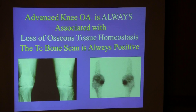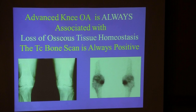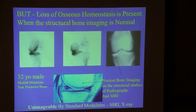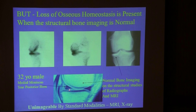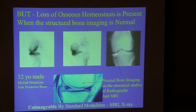Advanced knee arthrosis is always associated with loss of tissue homeostasis. Not many people know that the same loss of osseous homeostasis occurs in patients with normal x-rays and normal MRI bone signal in a patient with a torn medial meniscus. Loss of osseous homeostasis can occur readily in the presence of normal structural imaging — normal x-ray, Kellgren-Lawrence zero, and even normal MRI bone signal.